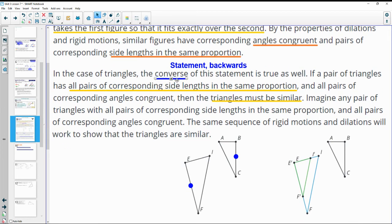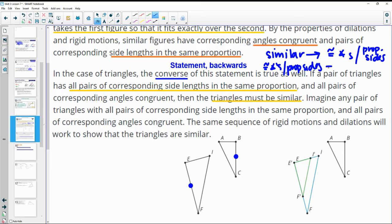Then we have what's called the converse of a statement, and it's just the statement backwards. So previously we were given similar figures. We knew these two facts about them. So now what we're going to be seeing is when we have these two characteristics, we see congruent angles and we see proportional sides, that's going to mean that the figures are similar. So we're going to be looking for these characteristics.